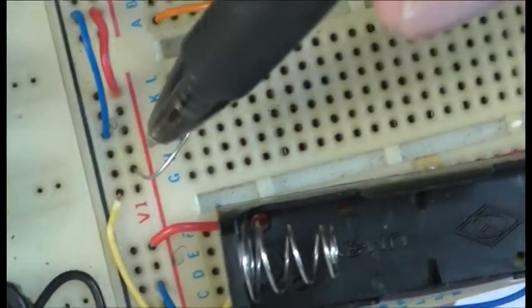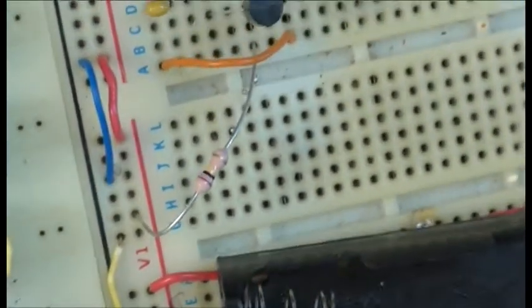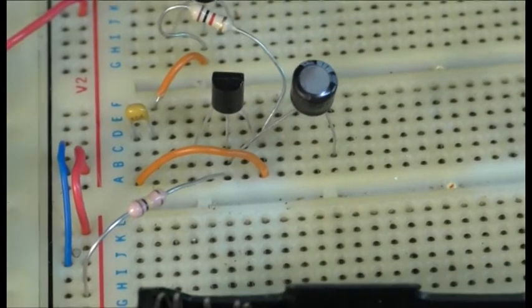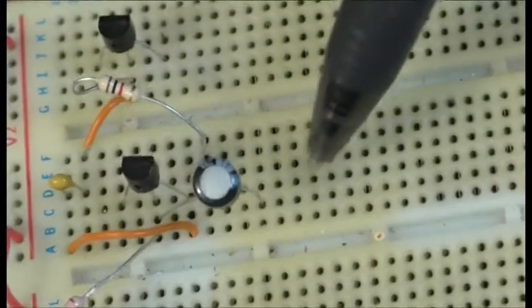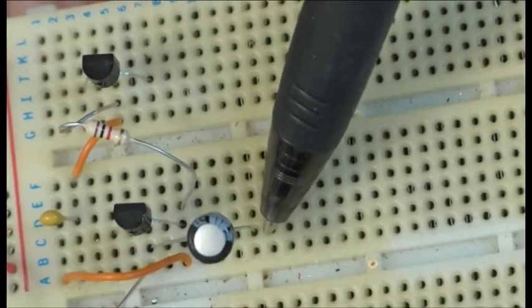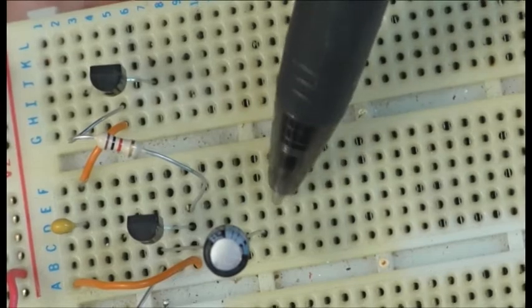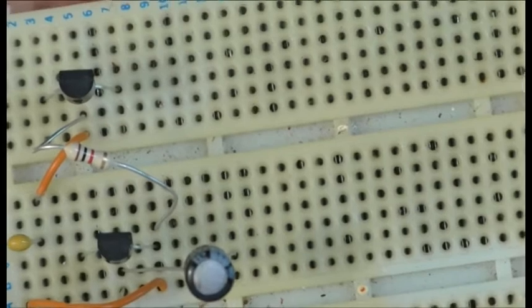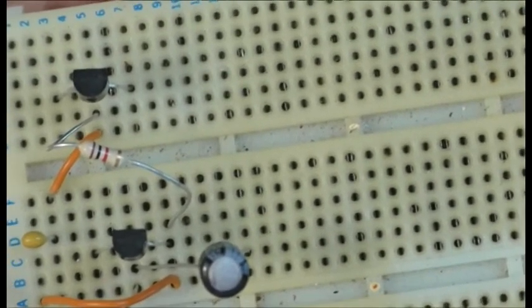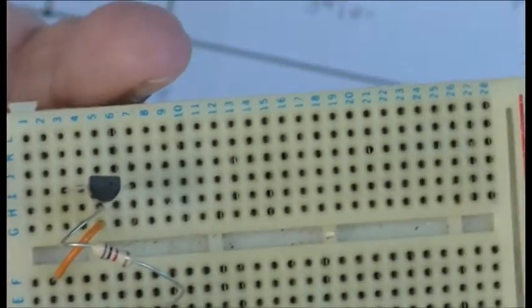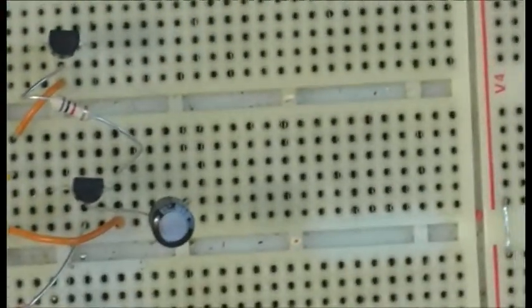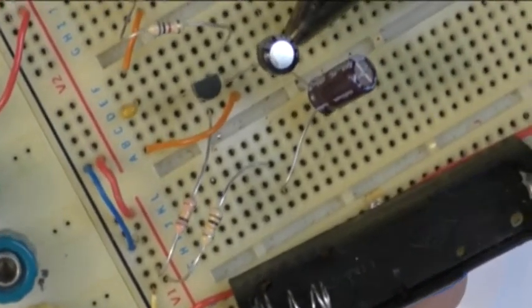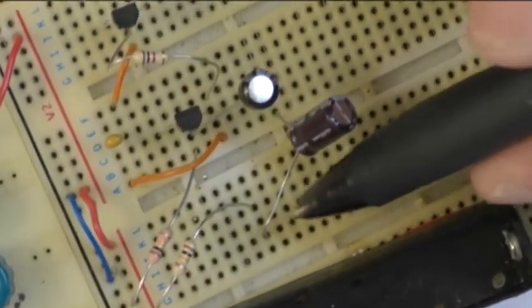The 10 microfarad capacitor - the positive side is connected to the base and brought it at this side which is going to go onto R3 and also onto the collector of the BC557. So the 10 microfarad capacitor is connected to this junction here, and I made a junction here.